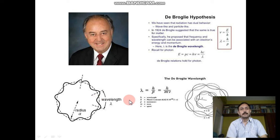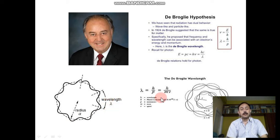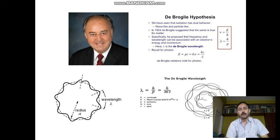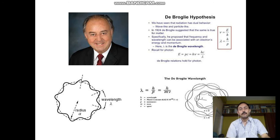This figure suggests that an electron is revolving around the nucleus and the radius of the orbit is A, producing a wavelength lambda. De Broglie proposed that a wave is always associated with every moving particle like an electron. The corresponding wavelength is called the de Broglie wavelength, given by λ = h/p, where p is the momentum and h is Planck's constant. MV represents momentum.